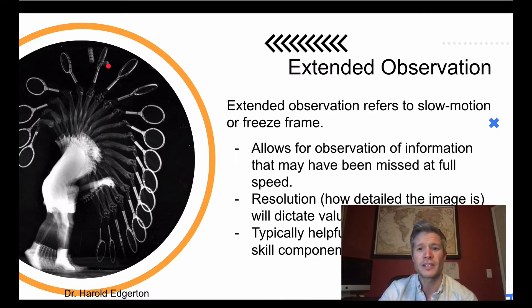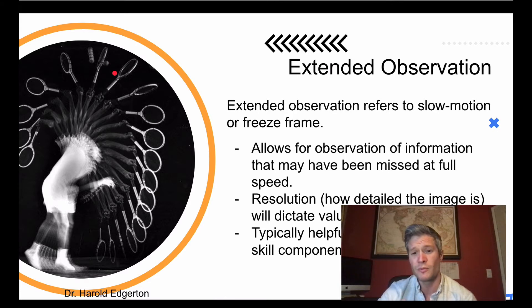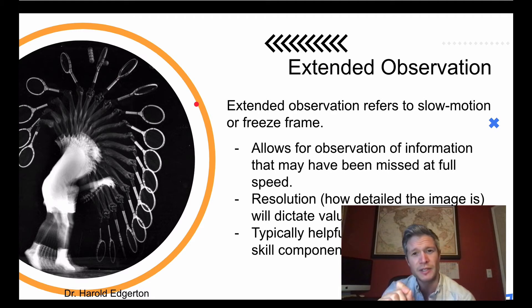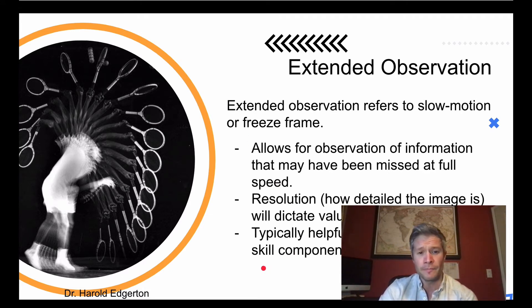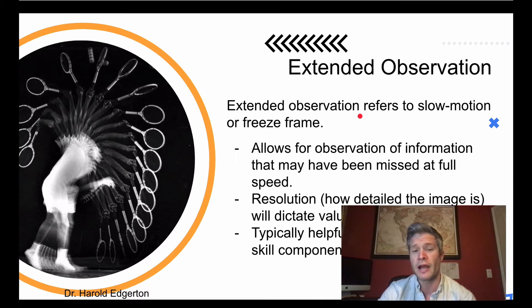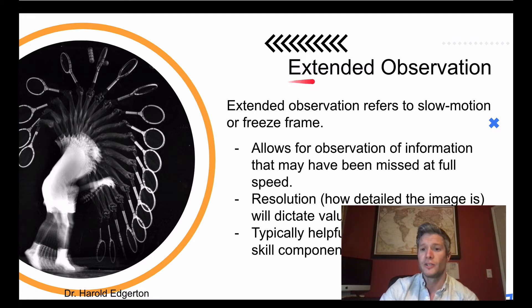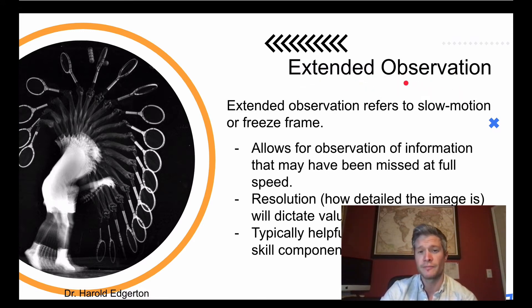Extended observation is typically used when there are fast movements we wouldn't normally be able to see, or fine motor skills that just might happen in a way an observer can't capture normally. So if you have a motor skill that happens at a fairly high velocity in your systematic observation plan, you should probably include something that allows for extended observation.